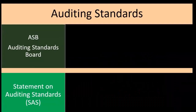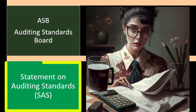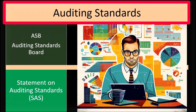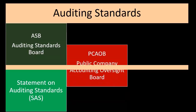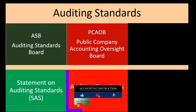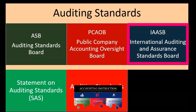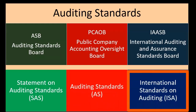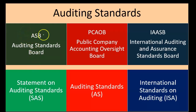The Statement on Auditing Standards — the SAS — is issued by the ASB, the Auditing Standards Board. Then we have the PCAOB, the Public Company Accounting Oversight Board, which issues Auditing Standards, or AS. And then we have the IAASB, the International Auditing and Assurance Standards Board, which issues the International Standards on Auditing, or ISA.